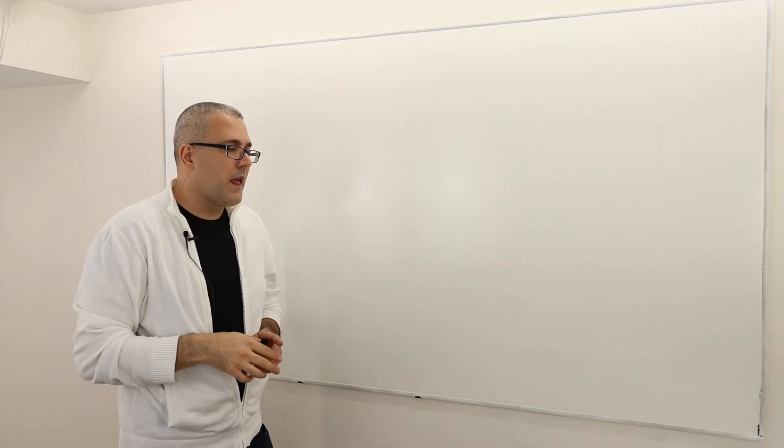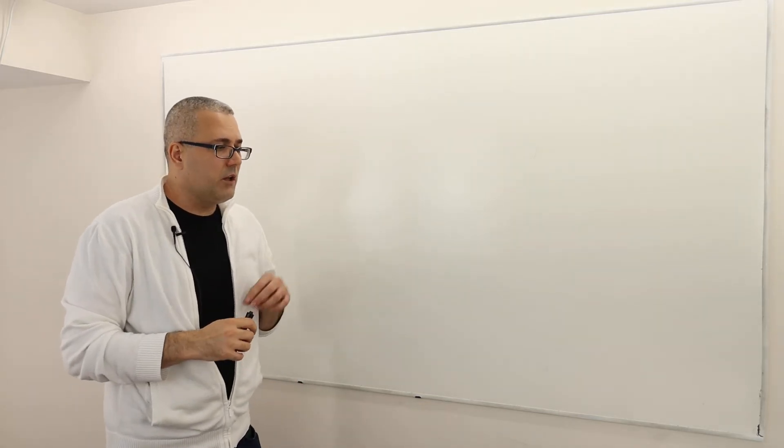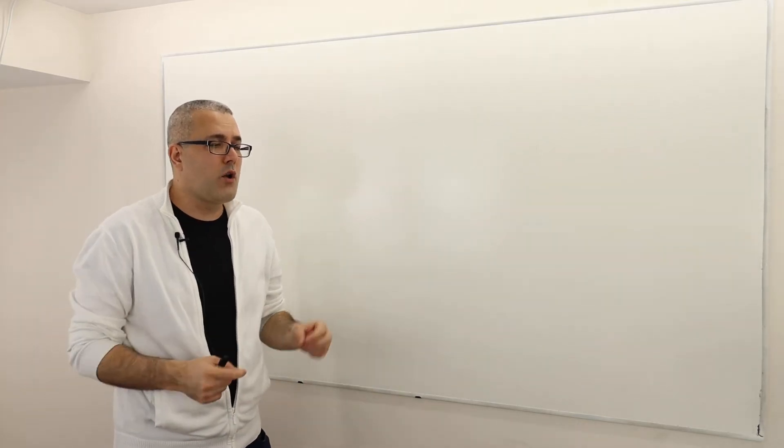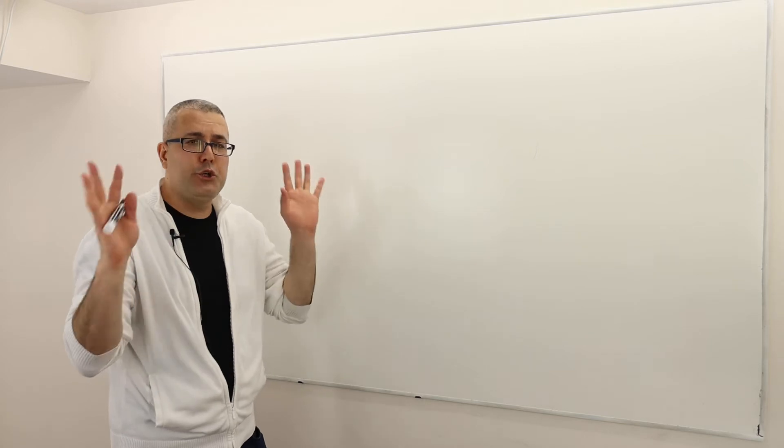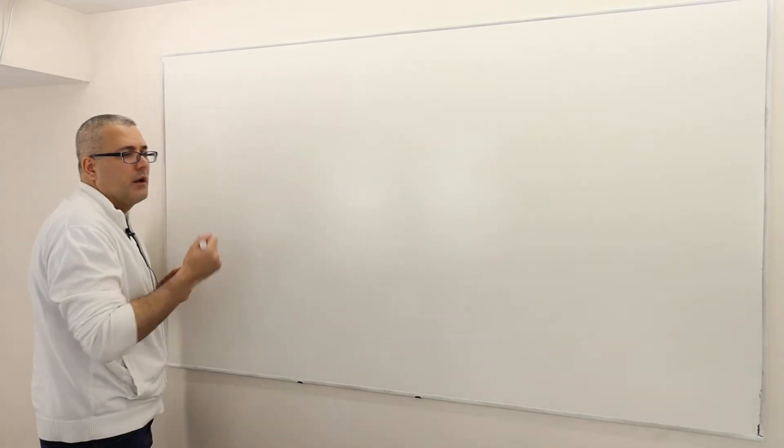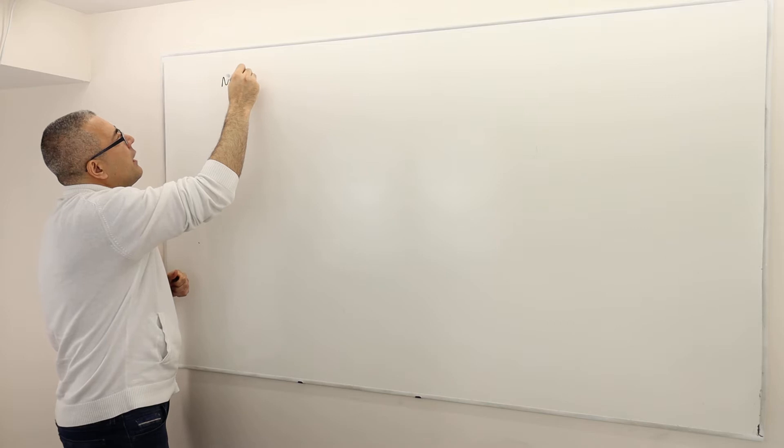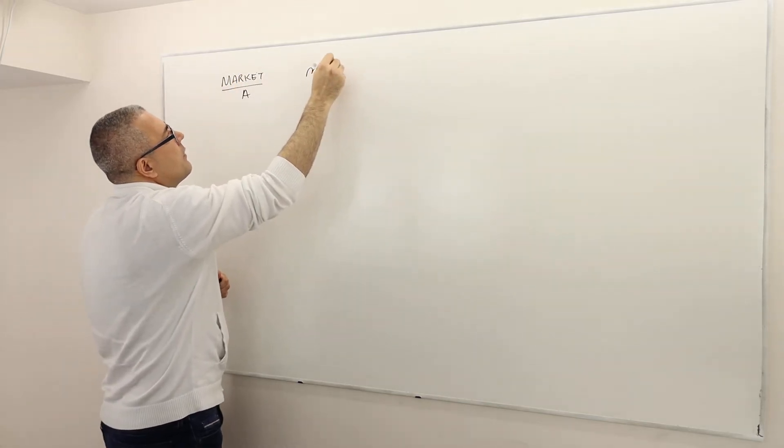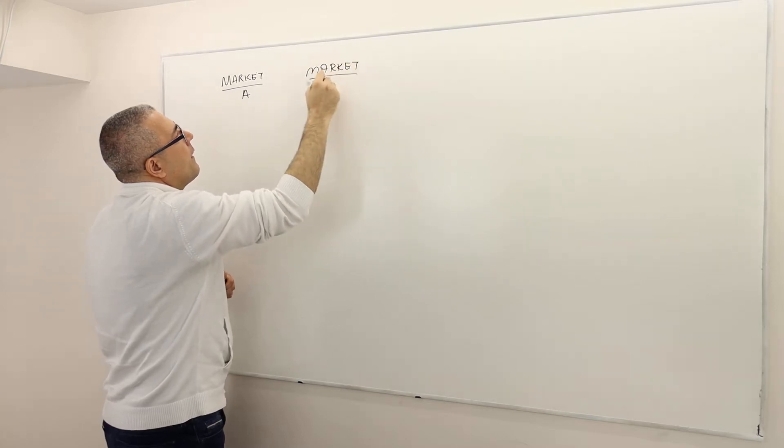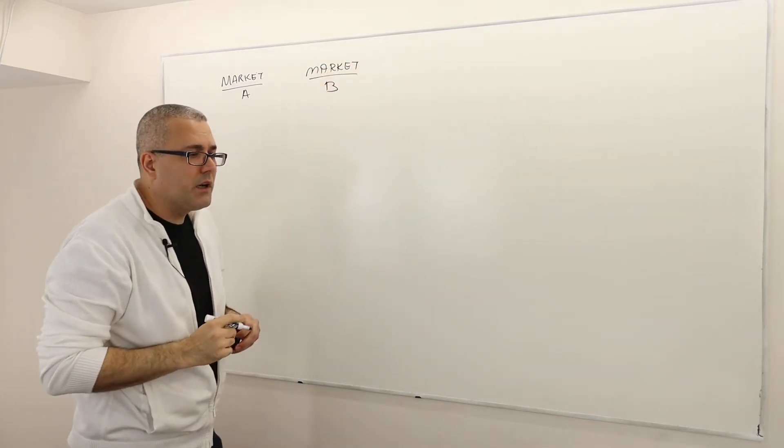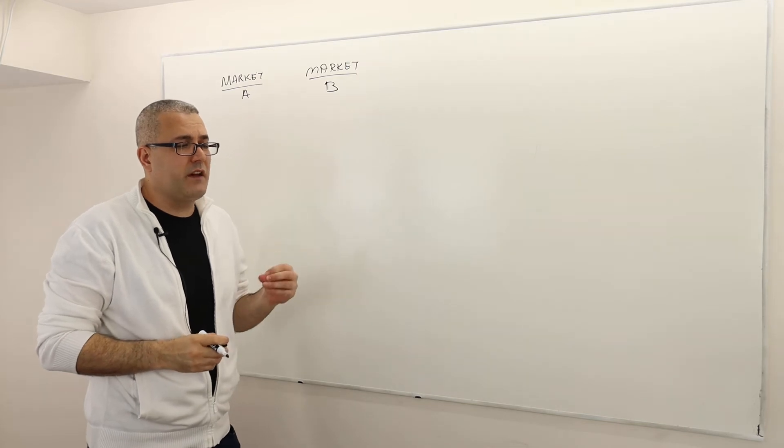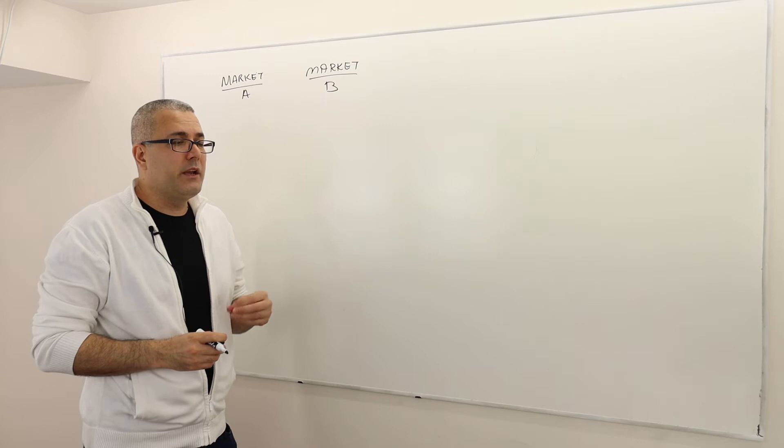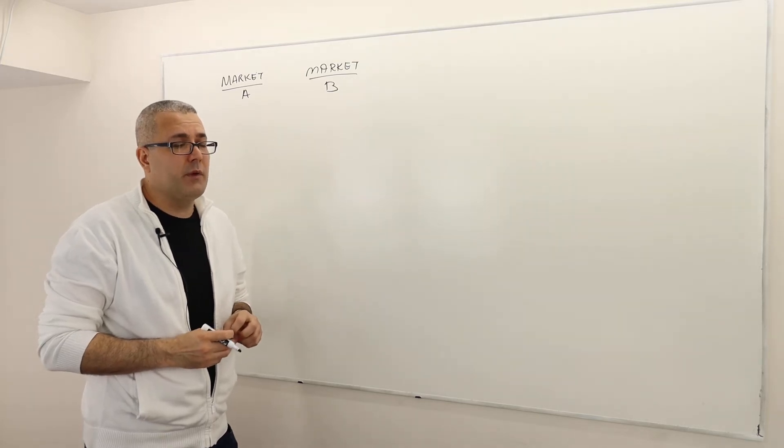So this is the fourth question and it reads as follows. Suppose that policymakers are considering placing a tax on one of two markets. So there are two markets, market A and then market B. So in market A, the tax will have a significant effect on the price consumers pay, but it will not affect equilibrium quantity very much.